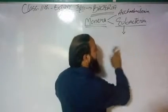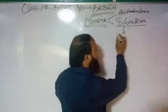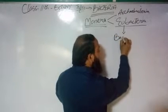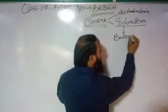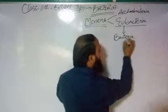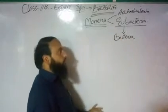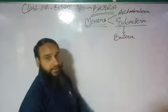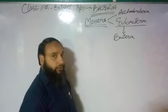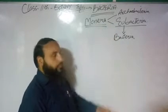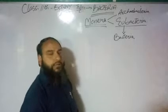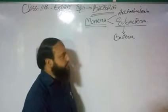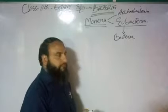Eubacteria has several phyla, or we can say sub-groups. The most important among them is the bacteria which we actually study in detail, because if we study bacteria as a group, it will actually cover all the organisms of the kingdom, since there are very few variations.